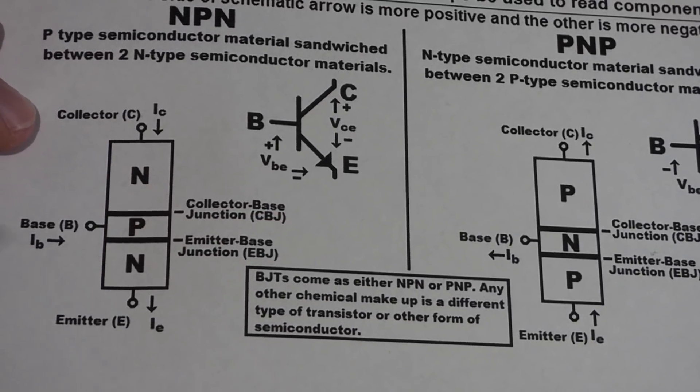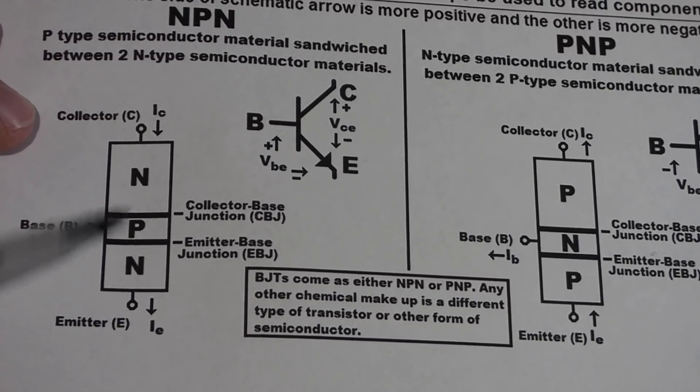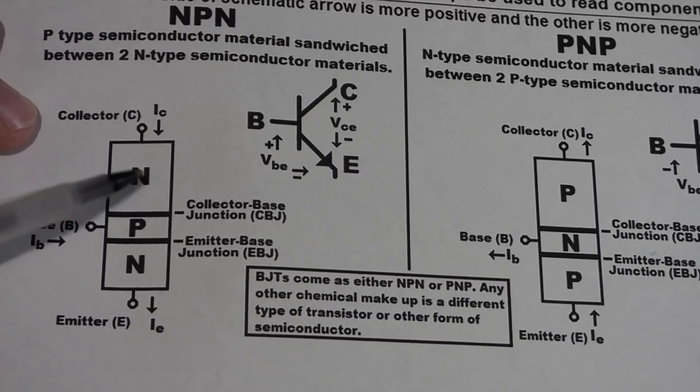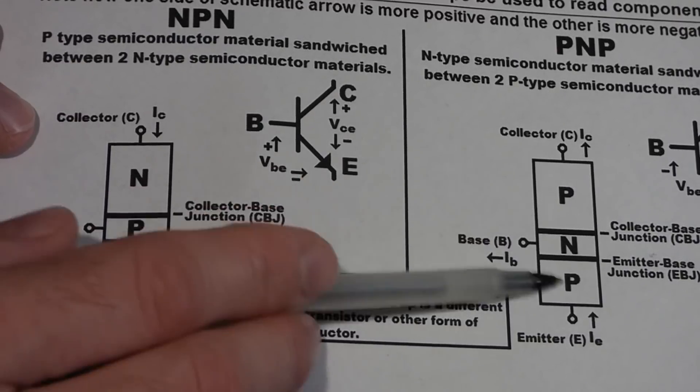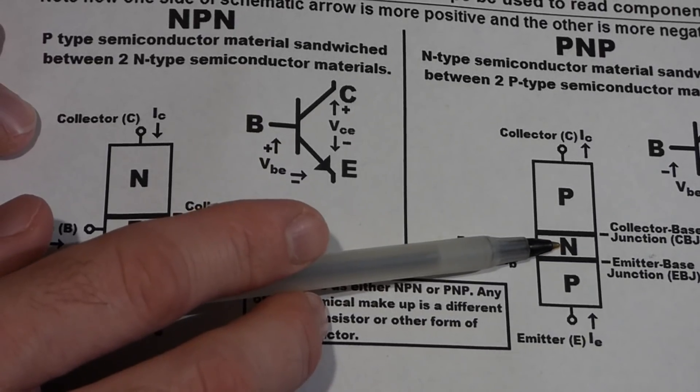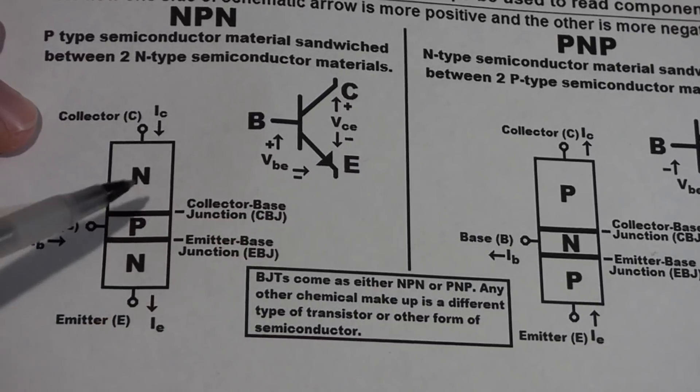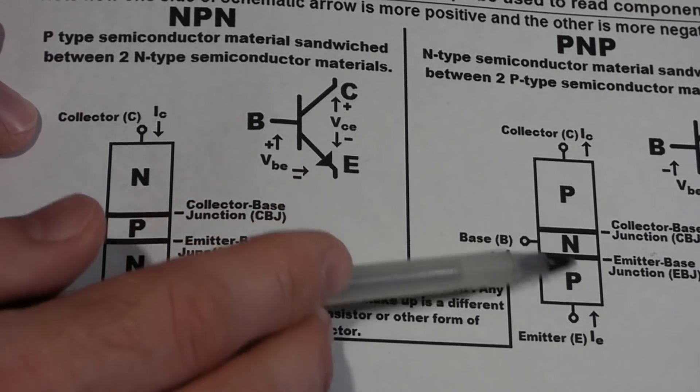So NPN transistor, bipolar junction transistor, has three chemical areas. You have a P-type material sandwiched between two N-type materials. The PNP bipolar junction transistor is the opposite. You have an N-type material sandwiched between two P-type materials. So the chemical makeup is either NPN or PNP.